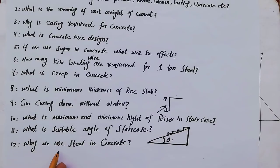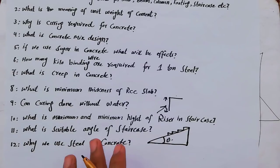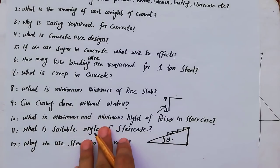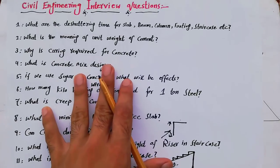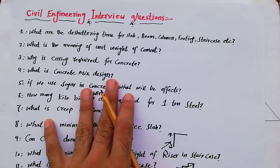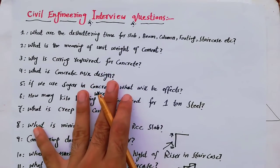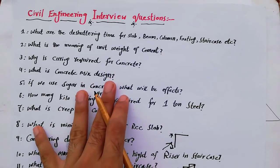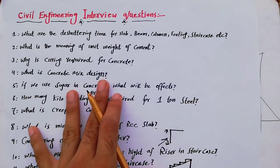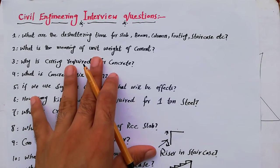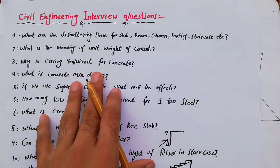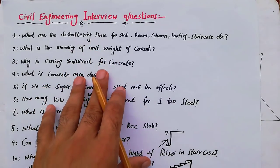The twelfth question is: why do we use steel in concrete? This is a common and important question. So these are some useful and basic civil engineering interview questions. If you want to pass your interview, you have to learn these questions and their answers.